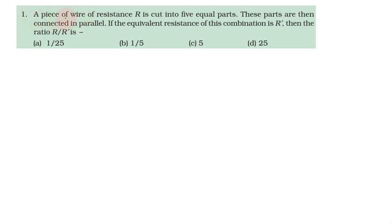A piece of wire of resistance R is cut into 5 equal parts. These parts are connected in parallel. Find the equivalent resistance of this combination R', and then the ratio R by R'.